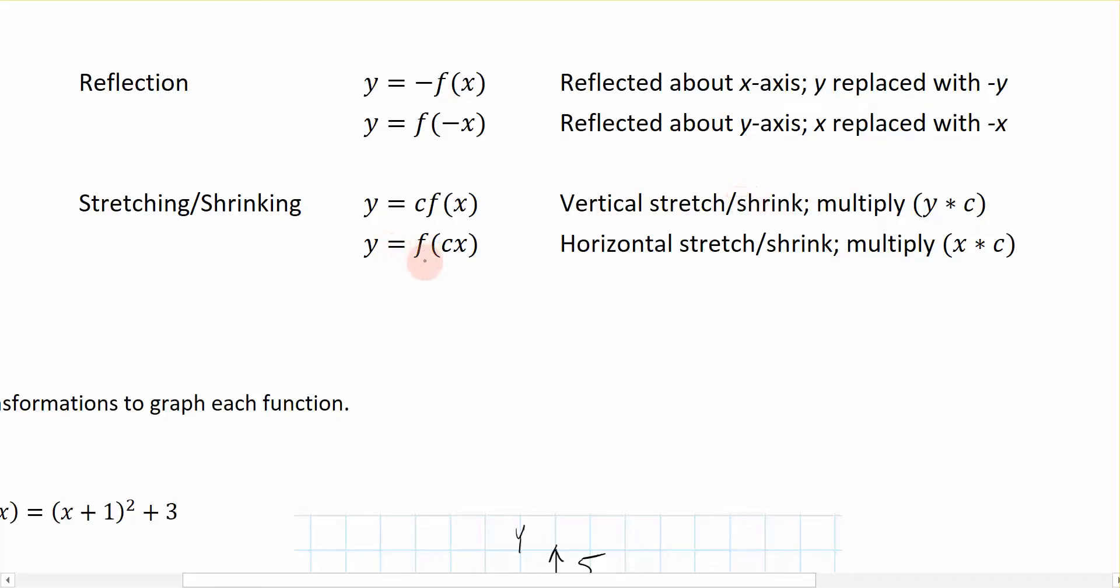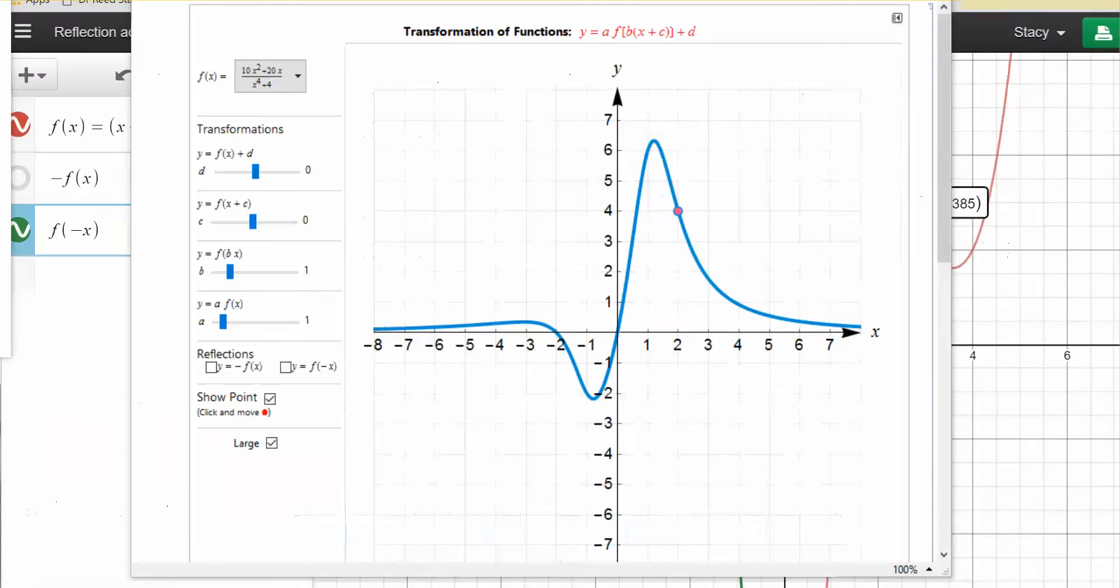Now, if I instead multiply inside of the function, we have a horizontal stretch or shrink, because we are multiplying the x-coordinate by the function. So if we take a look at this interactive figure, to kind of get an illustration of what those stretches look like, let's kind of play around with this for just a second. Remember I said that if we are multiplying on the outside of the function, we have a vertical stretch.